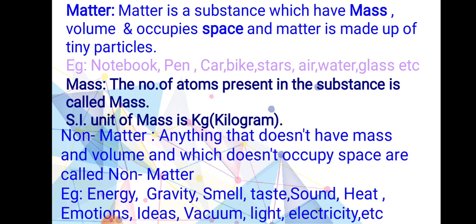For example, if you want 5 kg of energy, no person can give that, because we cannot stake it — it doesn't have mass and will not occupy space. We can't show energy; we can only feel it. We can feel smell, taste, heat, or even ideas. We can share ideas, but we cannot say how much — whether it is 5 kg or 10 kg — because it cannot be weighed. So energy, vacuum, light, and electricity are called non-matter.